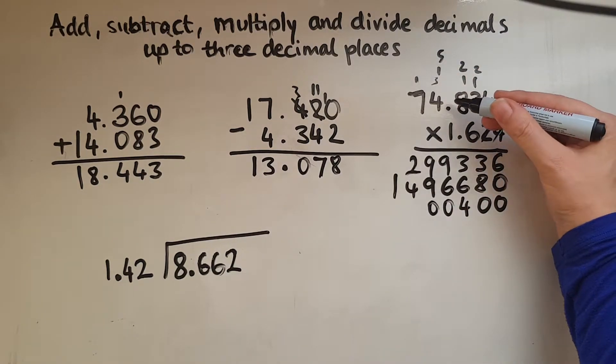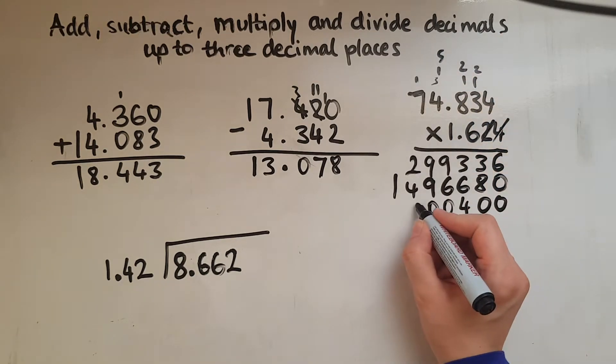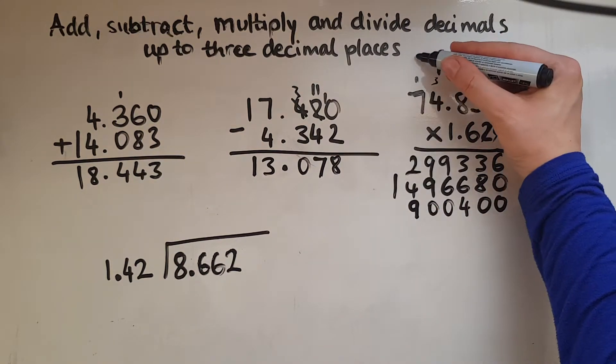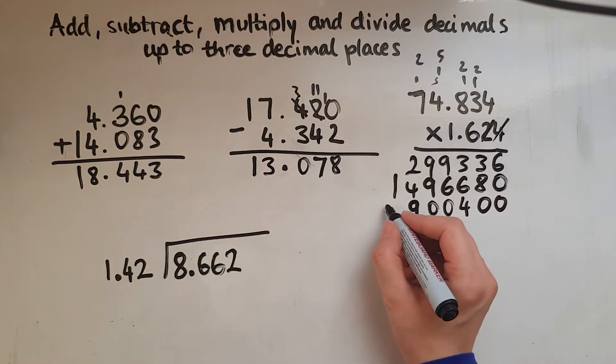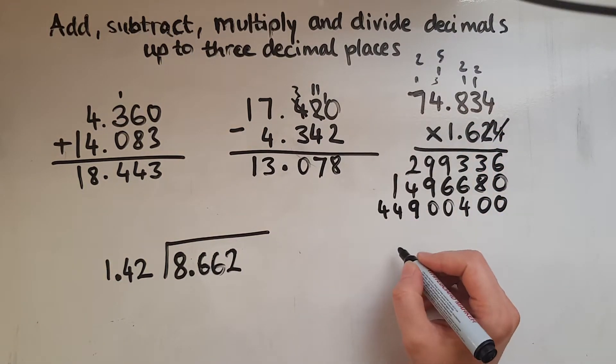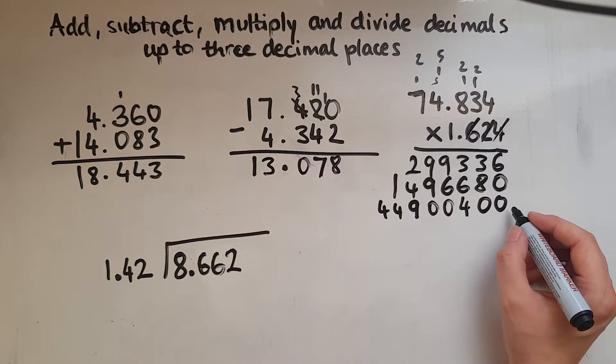6 times 4 is 24, and the 5 is 29. 6 times 7 is 42, and the 2 is 44. So we've finished with the 6 as well. So we've got 1, 2, 3 places there now.